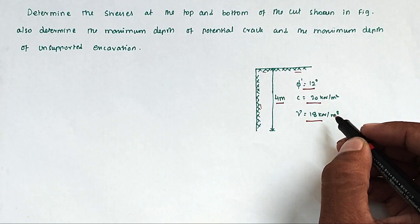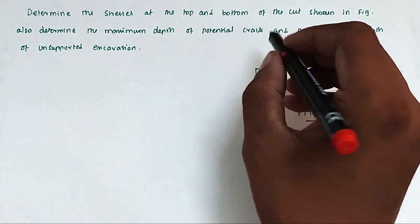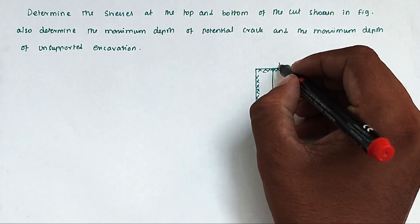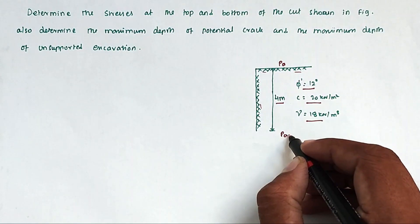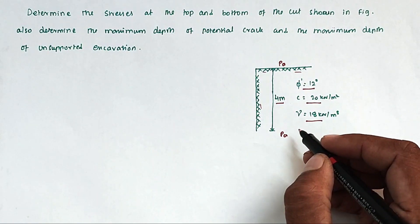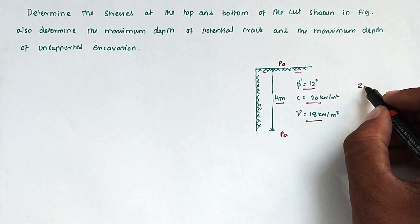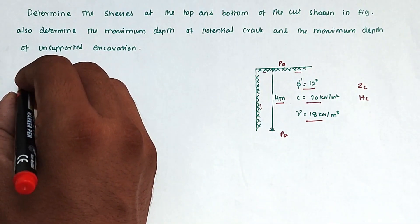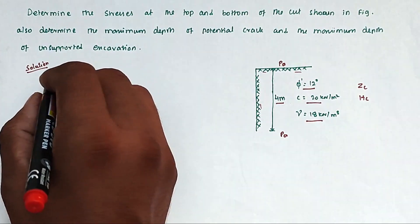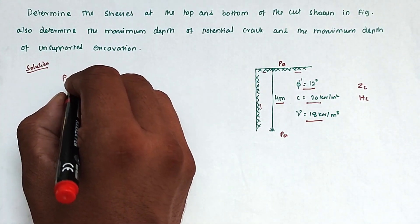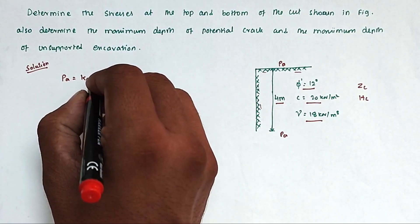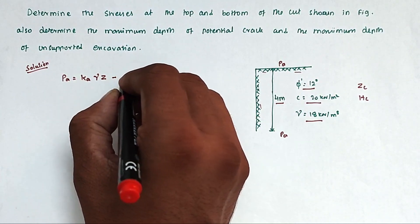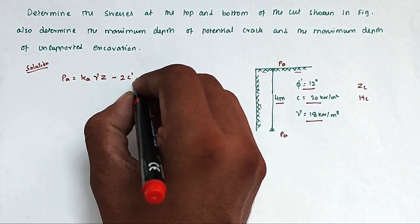We have to find out the stresses at the top and bottom of the cut — that is PA at the top and PA at the bottom. We also have to find out Zc and Hc. The formula is PA equal to KA × γZ minus 2C′√KA, where KA is the coefficient of active earth pressure. Since this involves local shear failure, we use C′ and φ′.